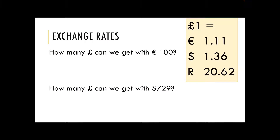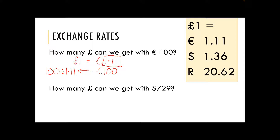Section two: how many pounds can we get with 100 euros? The exchange rate is one pound equals 1.11 euros. This time the euros are on the foreign currency side, and since we are coming back to pounds we are going to divide — and it is always by the exchange rate. 100 divided by 1.11 gives us 90.09009..., but rounding to two decimal places that is £90.09 — 90 pounds and nine pence.